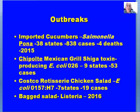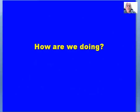Many of you are probably familiar with the Chipotle Mexican Grill outbreak — Shiga toxin-producing E. coli O26 occurred in nine states with 53 cases, certainly having an economic impact on Chipotle. Costco rotisserie chicken salad with E. coli O157:H7 happened in seven states with 19 cases. Bagged salad with Listeria in 2016. Over the last three to four months there have been a number of issues related to E. coli O157:H7, E. coli O121, as well as Listeria associated with a number of products including flour, with a number of recalls.